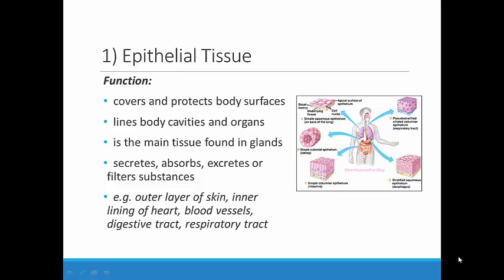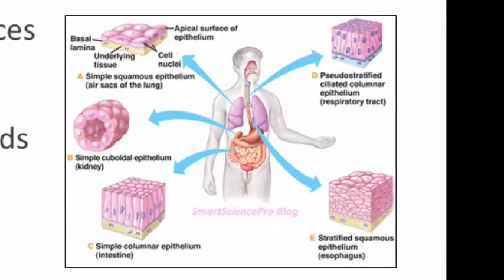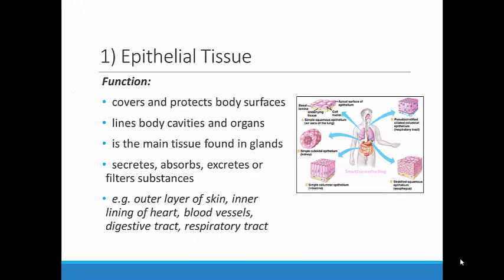The primary function of epithelial tissue is to cover and protect. The most obvious example is the skin covering the outer part of our body, but the inner parts of our body, such as body cavities and the insides of different organs, also need to be protected. Different types of epithelial tissue are found in these places. For example, your skin looks and feels different than your inner cheek, but they both cover and protect. Glands in your body are also made up of epithelial tissue.